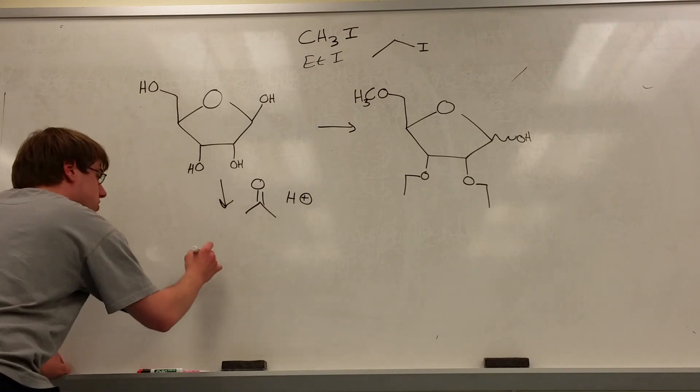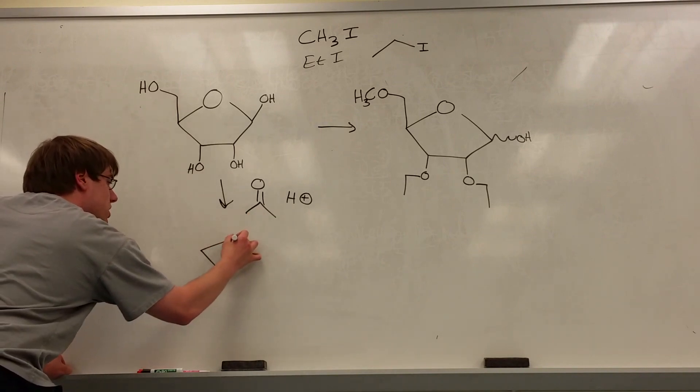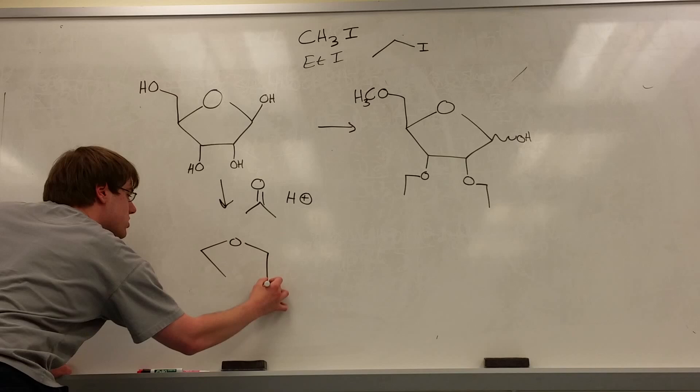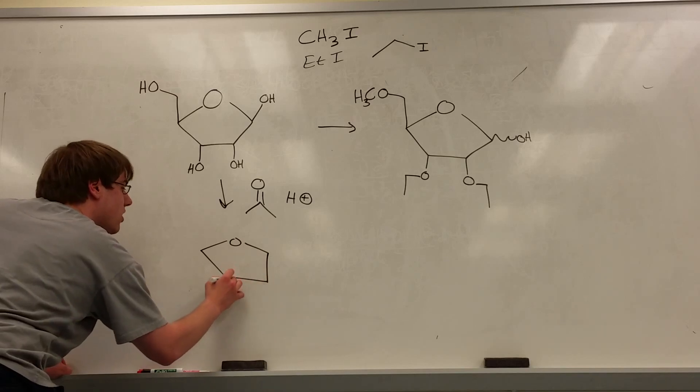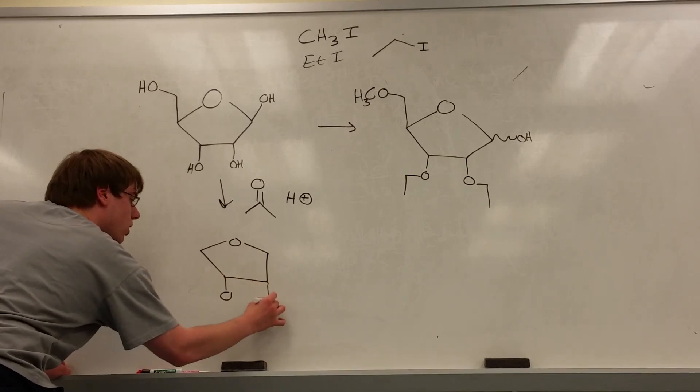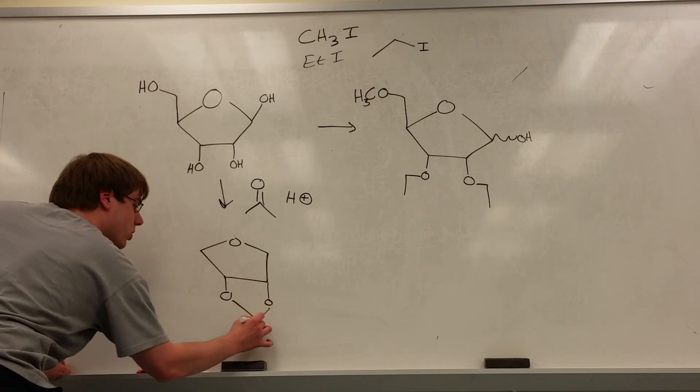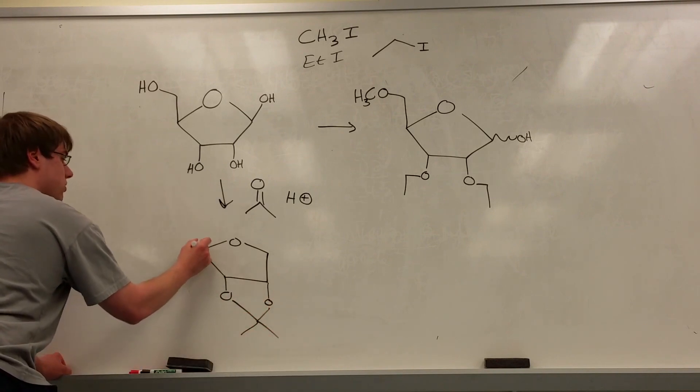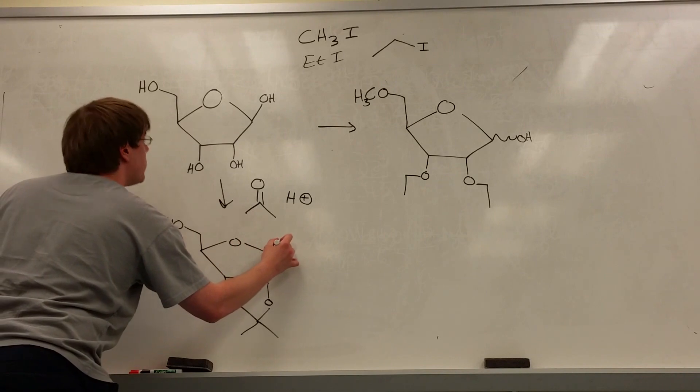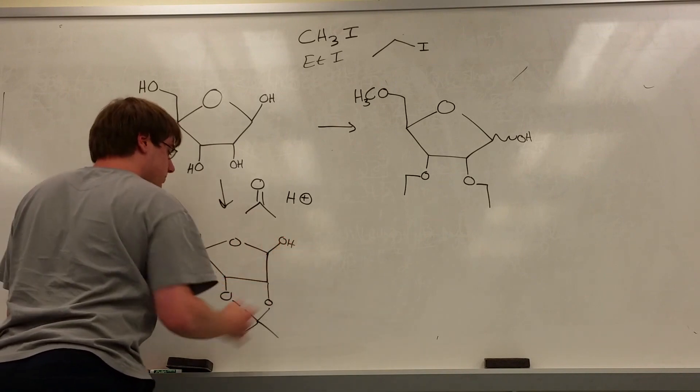So if this is your first step, all that you're doing is protecting those two bottom OHs. Now we have O, O, and now we have our OrgoBeast. And then the rest of the ring is exactly the same, because none of that reacts with the protecting group.